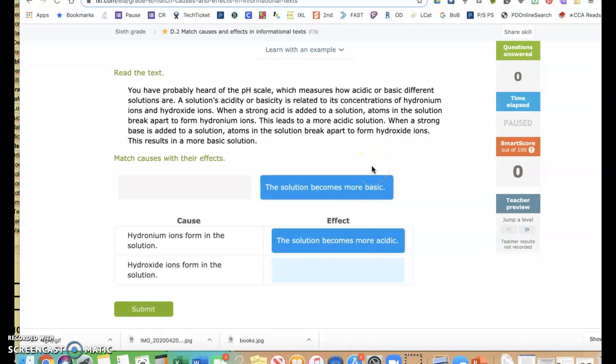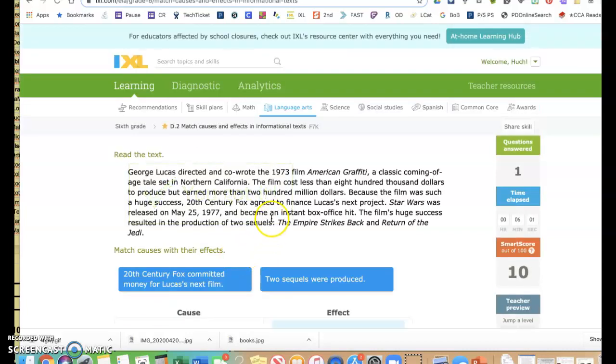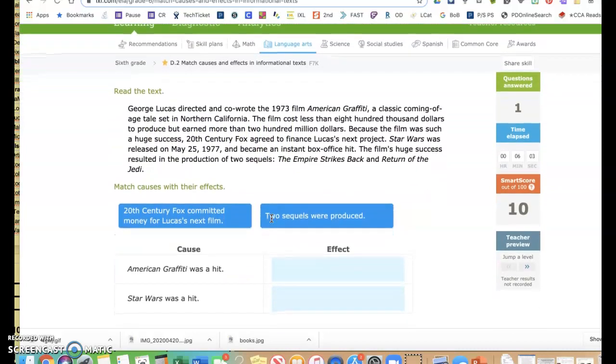And then hydroxide ions form in the solution. So when a base is added to a solution, atoms in the solution break apart to form hydroxide ions. This results in a more basic solution. So I add that here. You should be able to go back into the text and find these linked together. It might cause you to reread a little bit, but that's okay. That's part of answering reading questions.